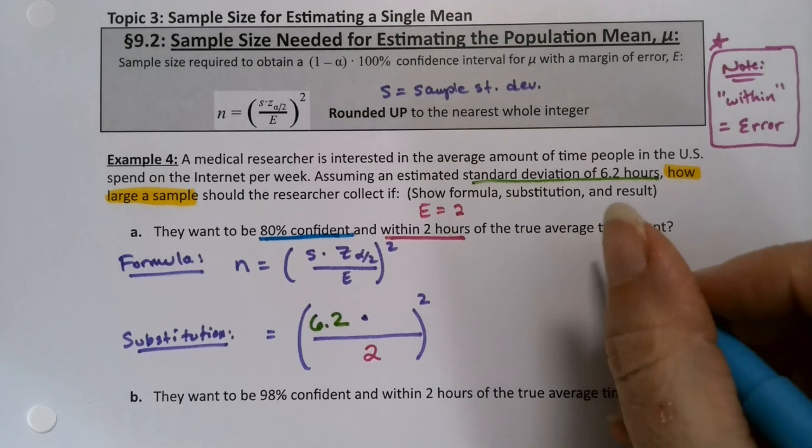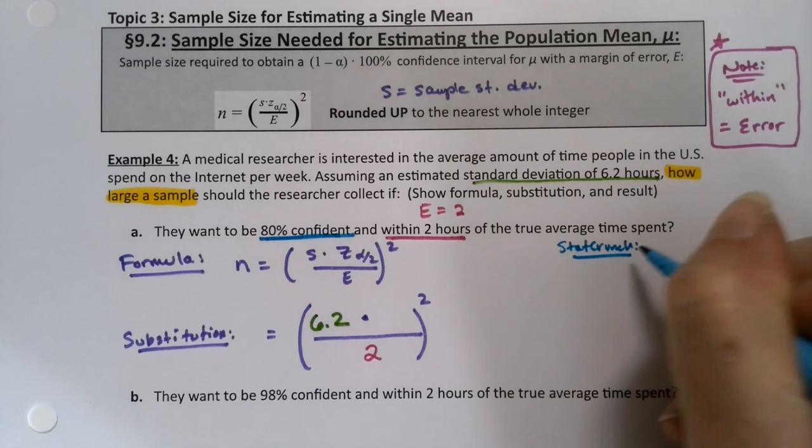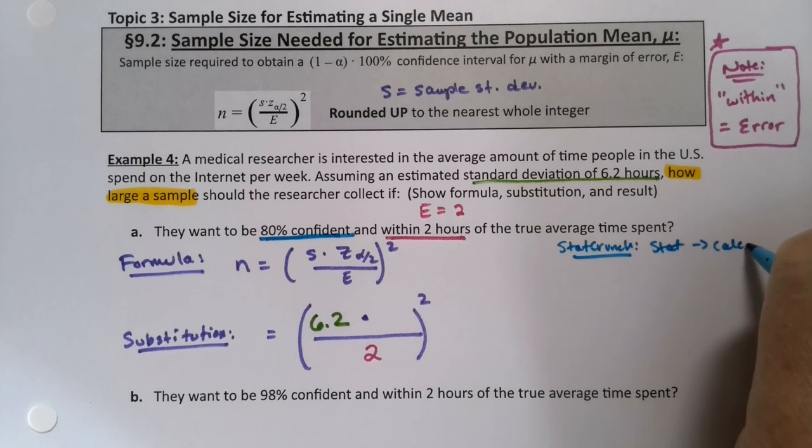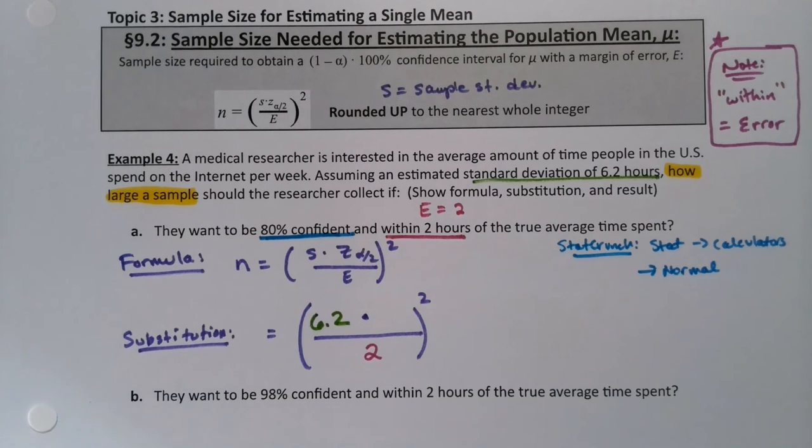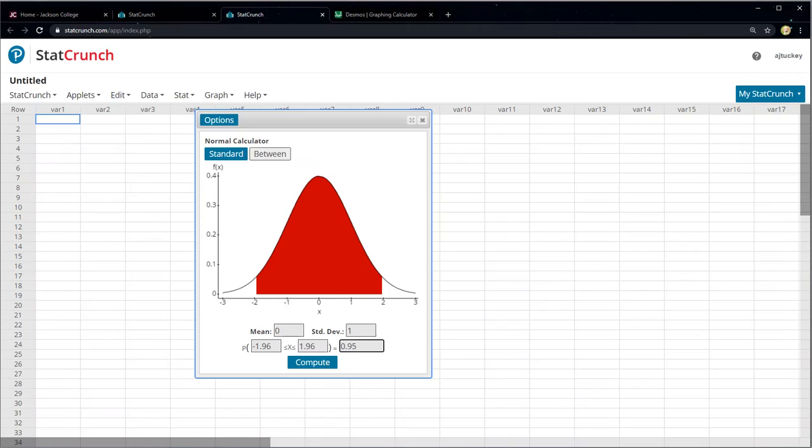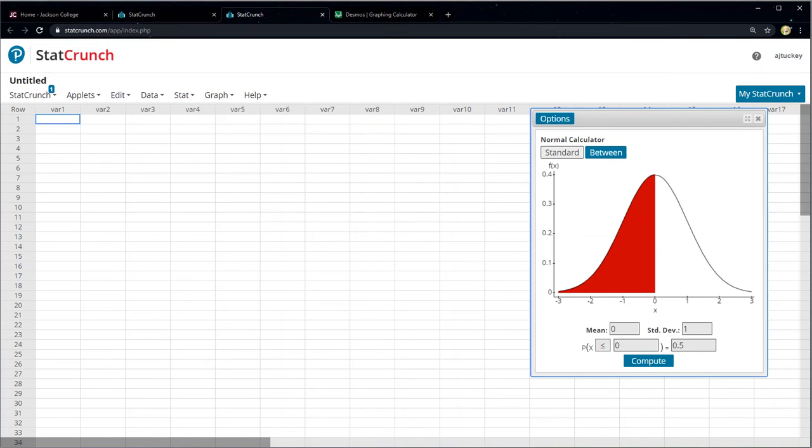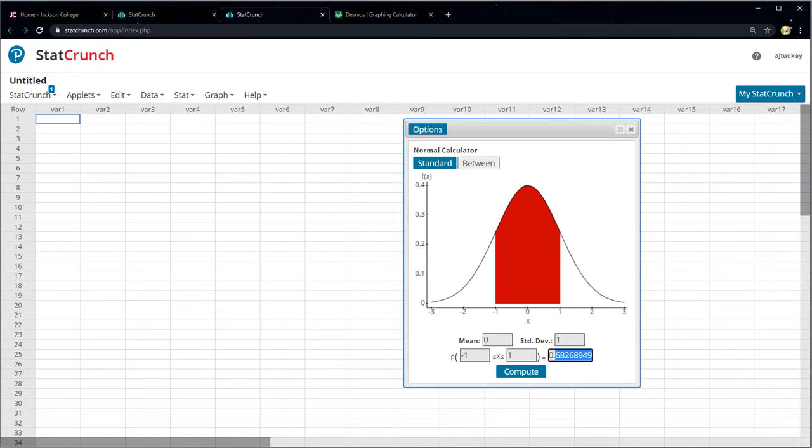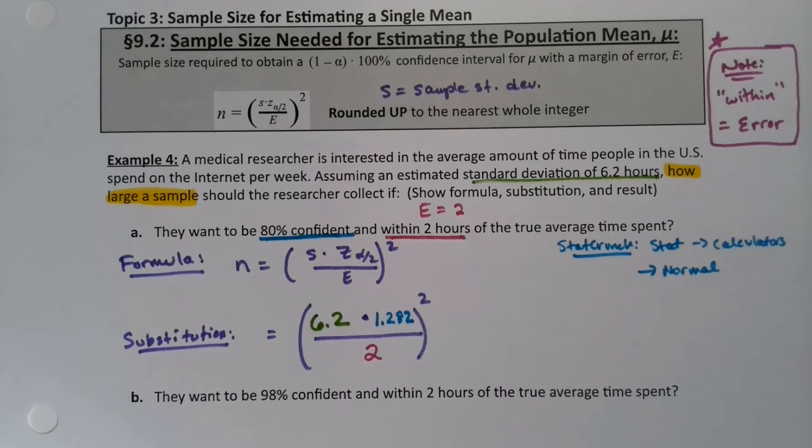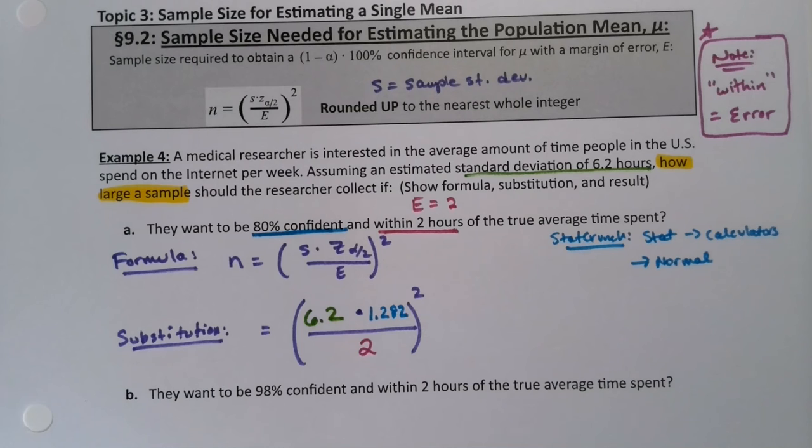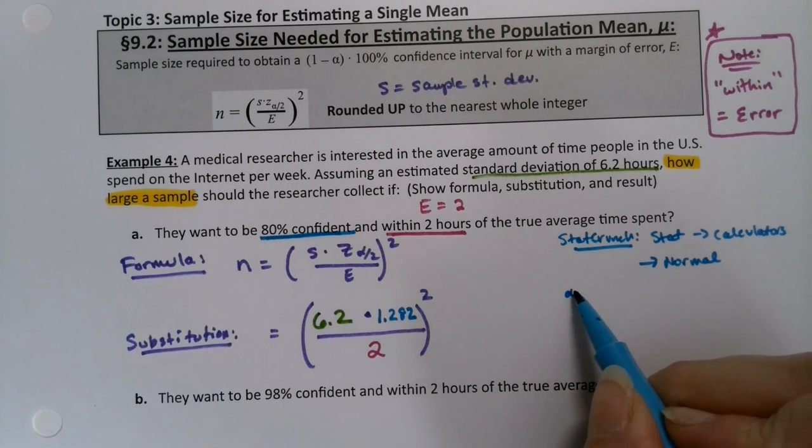If you want to find your z, you can go to StatCrunch. And this does not have to be written when you do this problem. You're writing it for yourself in your notes so you don't forget how to find a critical z value. You go to stat calculators normal. Click between and zero and one is fine. We wanted to be 80% confident, so I type point eight zero enter. And I can see that the z is 1.282. We usually do about three decimal places. You can do four if you want. We usually do about three, and the reason is because that's what the table does as well.